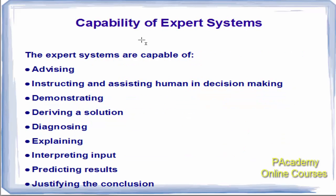What are expert systems capable of? Artificial intelligence expert systems are capable of advising. They can instruct and assist humans in decision making. They can demonstrate from the knowledge they have, and they can derive a solution.